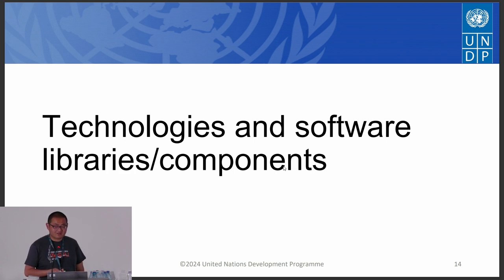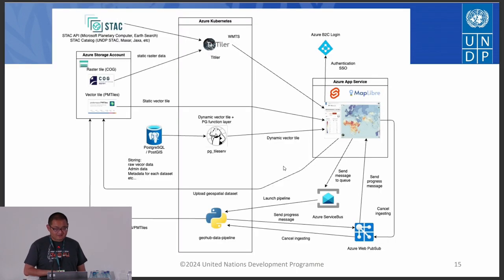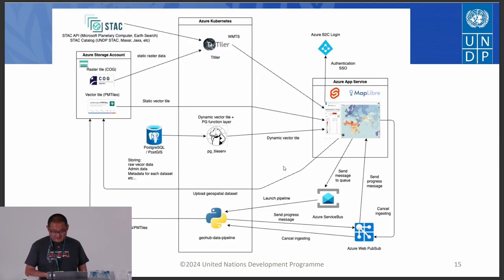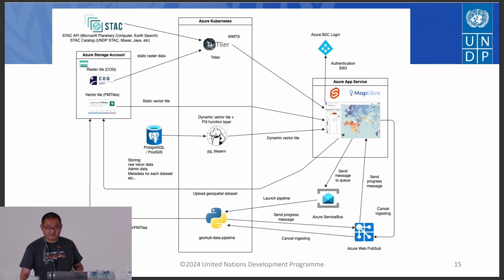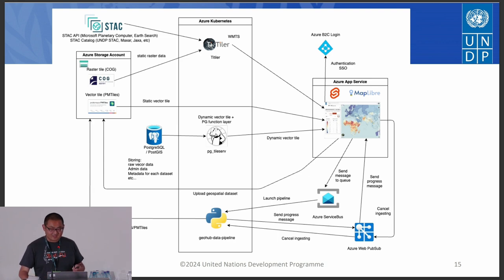Now I'll talk about what open source technologies are used in Geohub. This is the whole structure — Geohub is quite a complex system. On the front-end side, we deploy Azure App Services. We use Svelte and MapLibre to develop the front-end, and SvelteKit for some back-end endpoints. SvelteKit is a full-stack JavaScript framework that allows us to develop both front-end and back-end together.